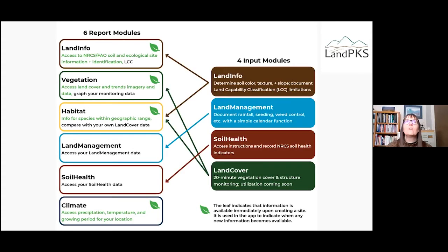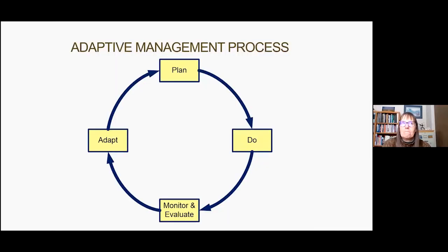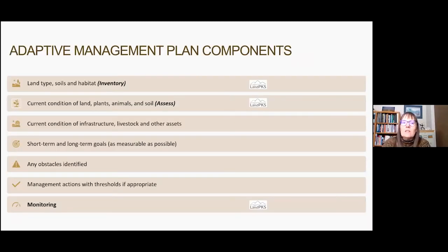There are four input modules: soils, land management activities, soil health, and land cover with vegetation and structure information. Today we'll talk about land info — how you know what soil you have at your location — and then about soil health. Land PKS fits into adaptive management by helping you take inventory, assess information, and monitor your land across all stages of the plan-execute-monitor-adapt cycle.